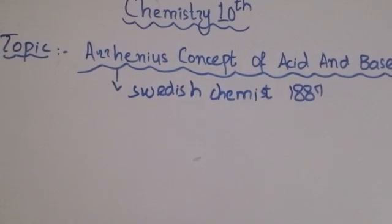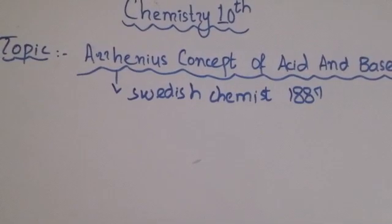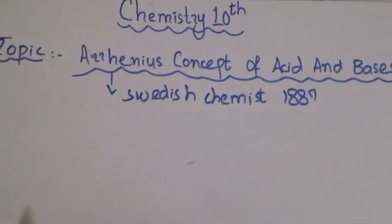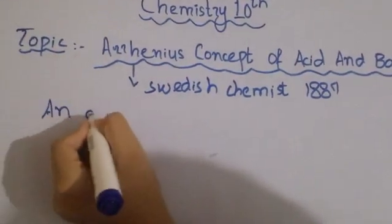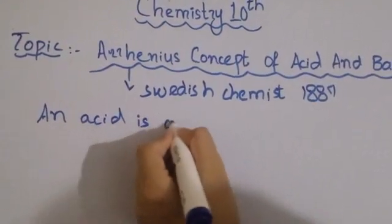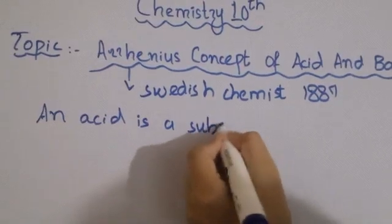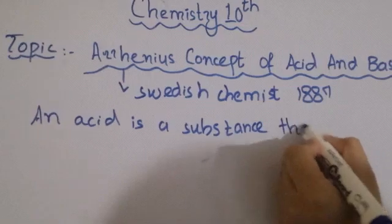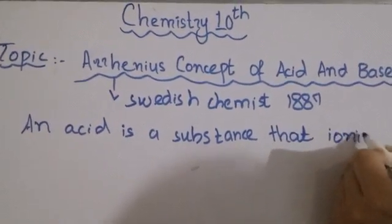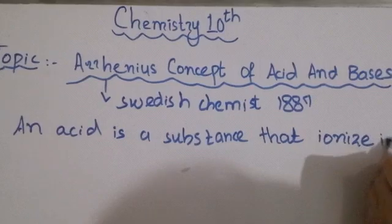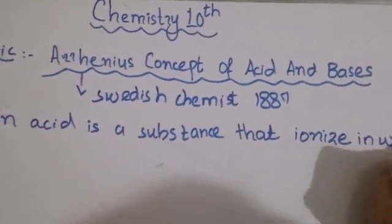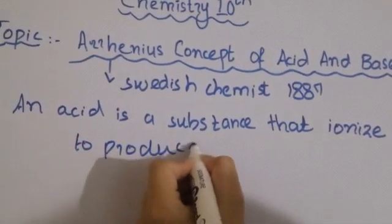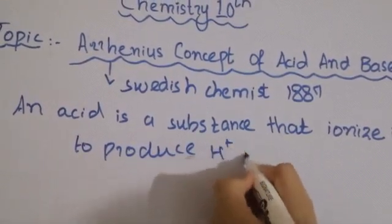He said that an acid is a substance that, when dissolved in water, produces hydrogen ions. An acid is a substance that ionizes in water and produces H⁺ ions.